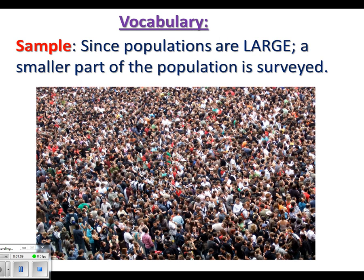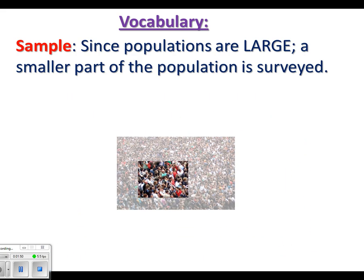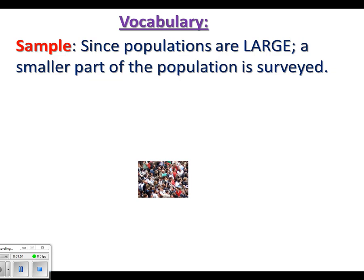Next is called a sample. Populations are very large, so you can't possibly ask every single person. For instance, if you want to know who watches a certain TV show, there's no way to ask every person in America who owns a TV. So they only sample a group of about 1,000 to 1,200 people or so. It's a smaller subset, and that way they get a pretty good idea of who's watching what, without the impossible task of asking millions of people.